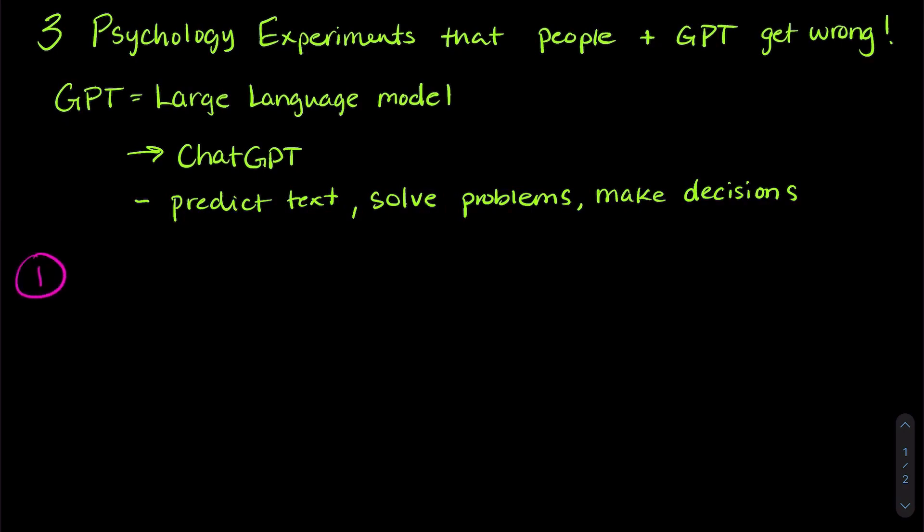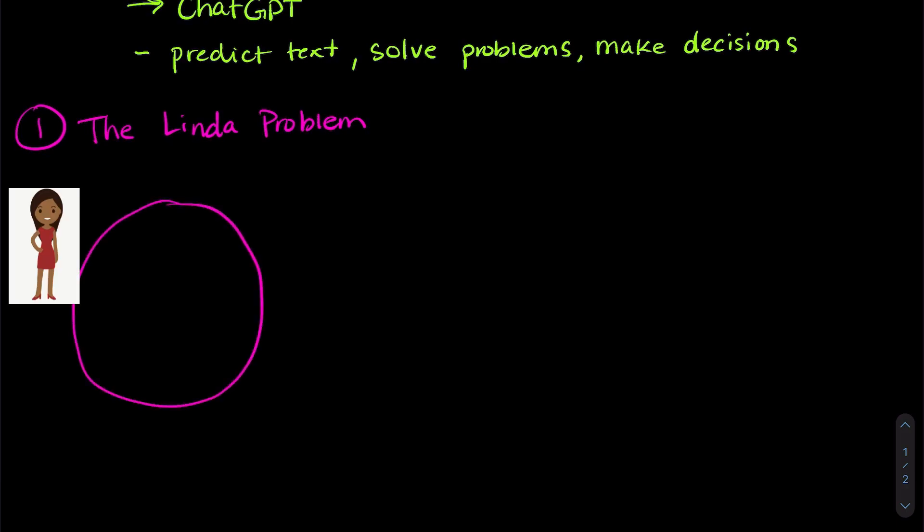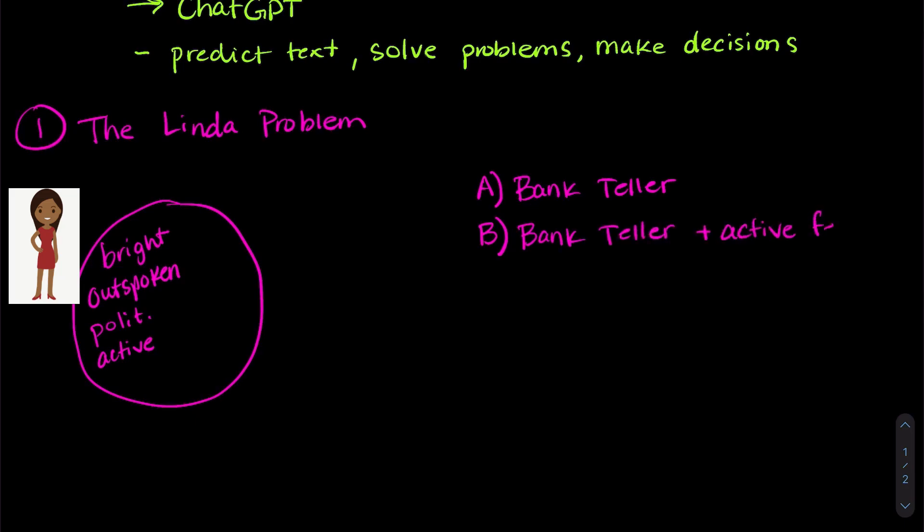So the first problem is called the Linda problem. This is a hypothetical situation where you have to make a decision. So Linda is a bright, outspoken, and politically active person. Now, the question is, is Linda also a bank teller? Or is it more likely that Linda is a bank teller and an active feminist?